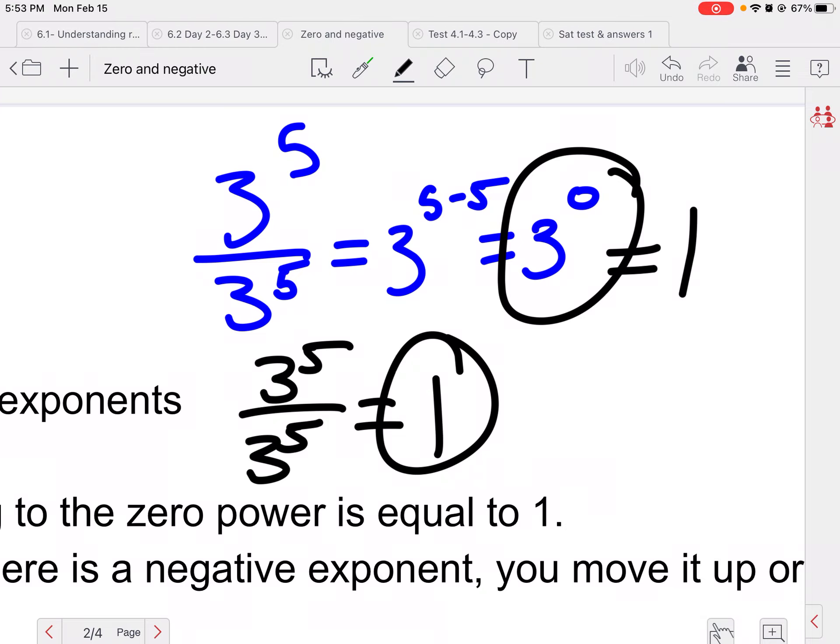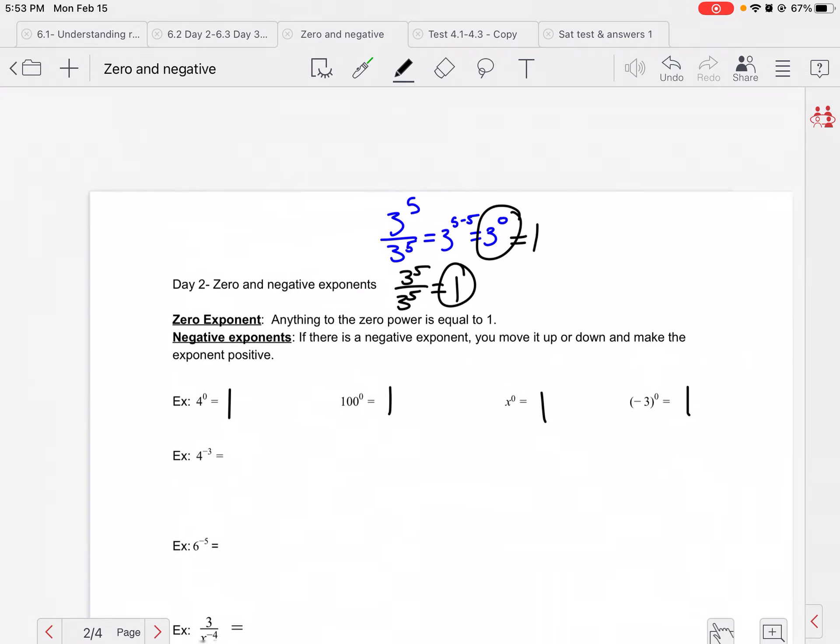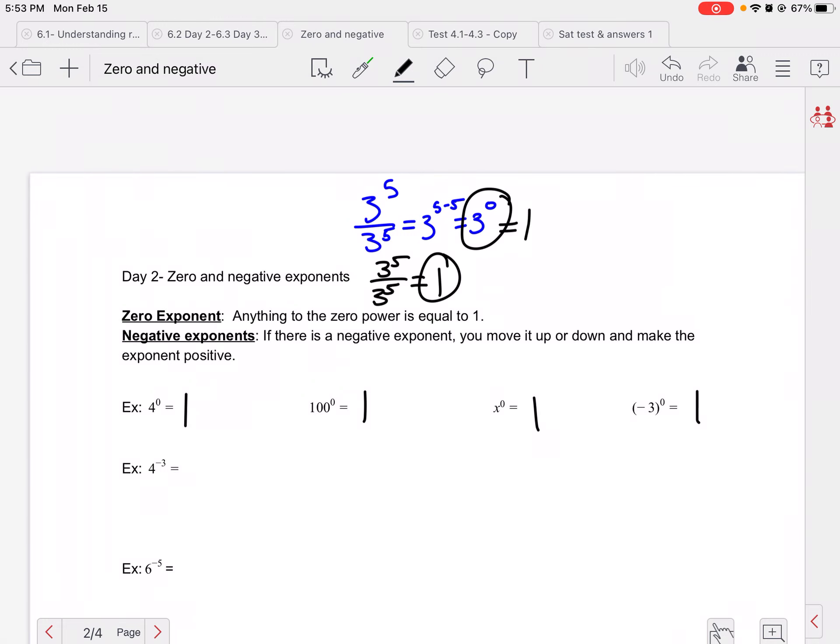So therefore, if 3 to the fifth over 3 to the fifth equals 3 to the zero, and it equals one, 3 to the zero has to also equal one in order for all of math world to work beautifully. So that is why anything to the zero power is one.